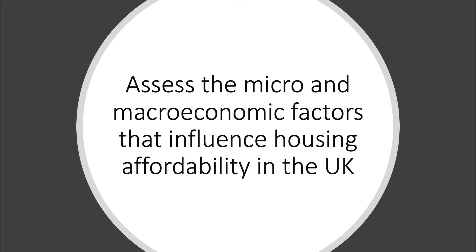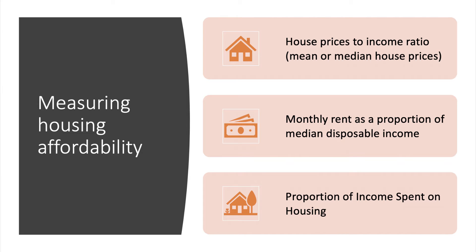The question is: assess the micro and macro economic factors that influence housing affordability in the UK. Housing affordability can be measured in various ways: one is house price to income ratios using the mean or median; in the rented sector it's the monthly rent as a proportion of median disposable income; or the proportion of income generally spent on housing.